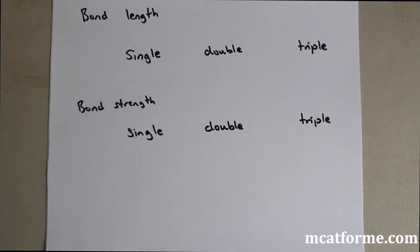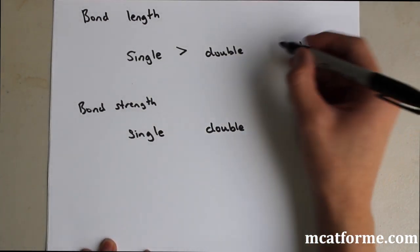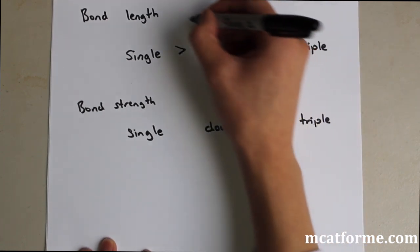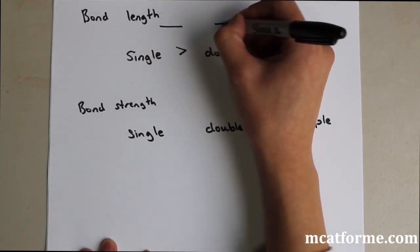So now we're going to be looking at bond length. So bond length, single bond is going to be the longest. So single bond is greater than double bond, and double bond is greater than triple bond. So it looks something like this, then the double bond gets shorter, then the triple bond gets even shorter.